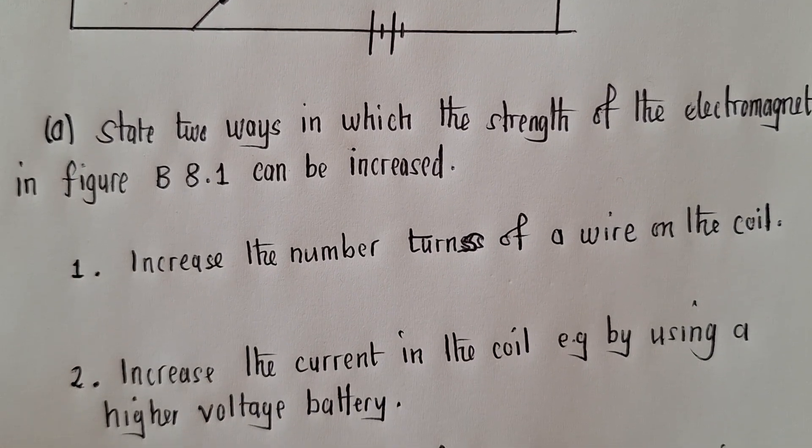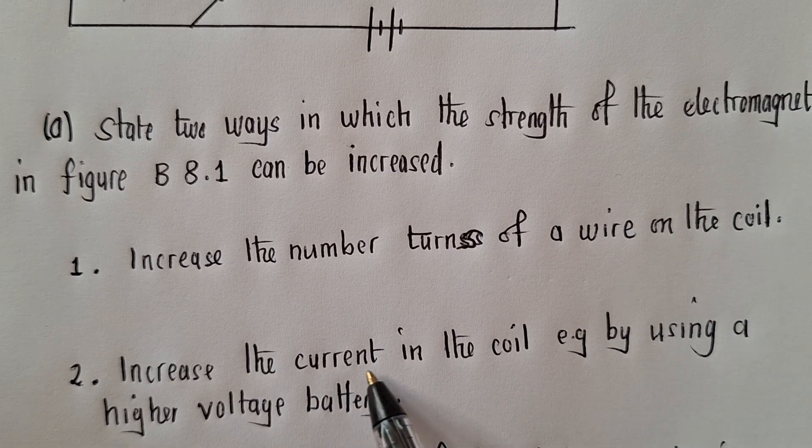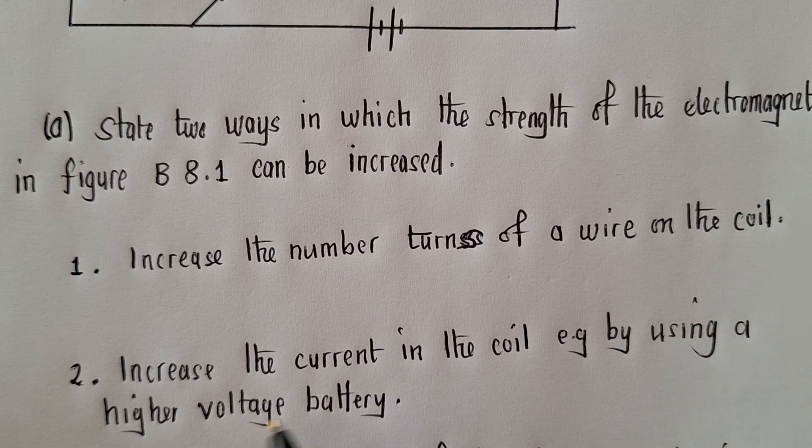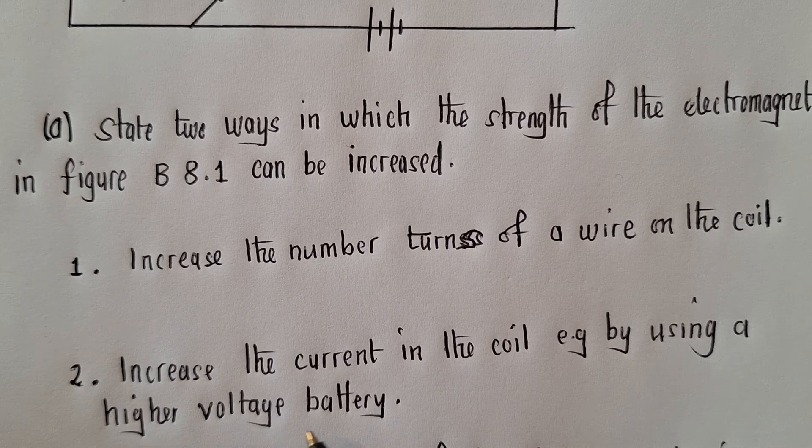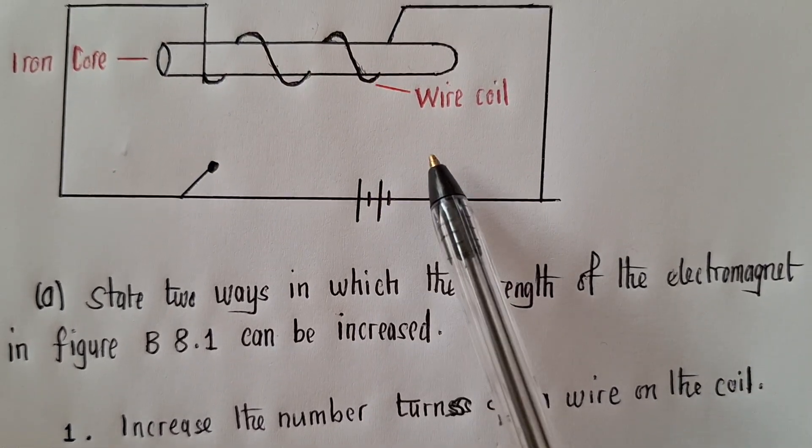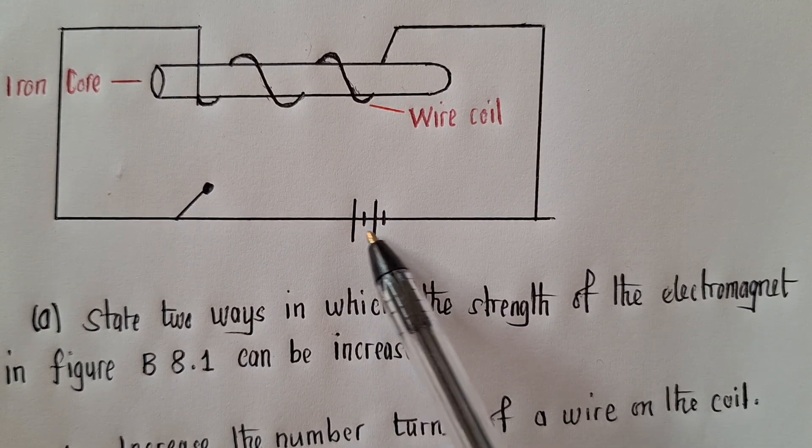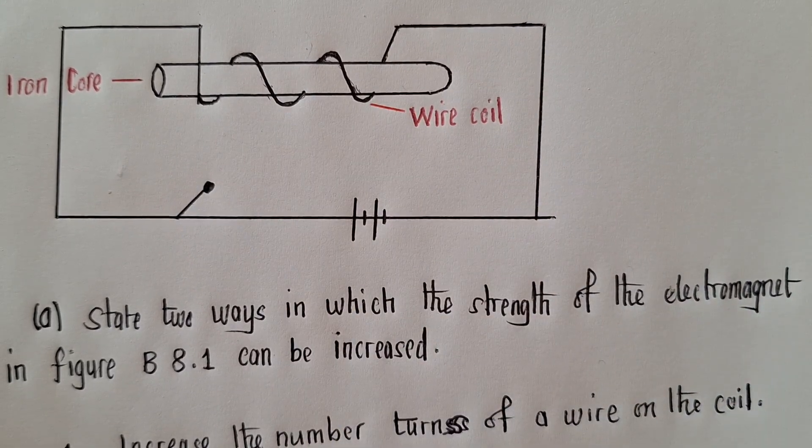So the other point is that increase the current in the coil, e.g. by using a higher voltage battery. So here, once you increase the battery, the magnetism will also increase.